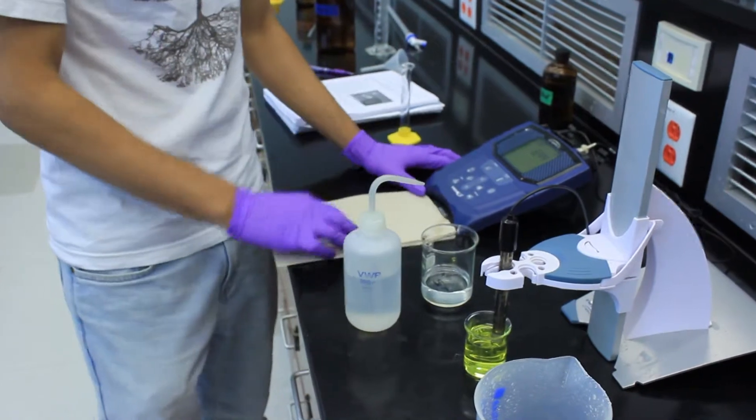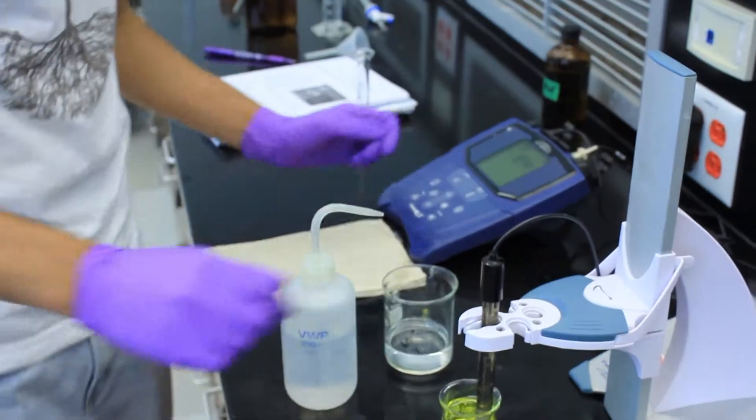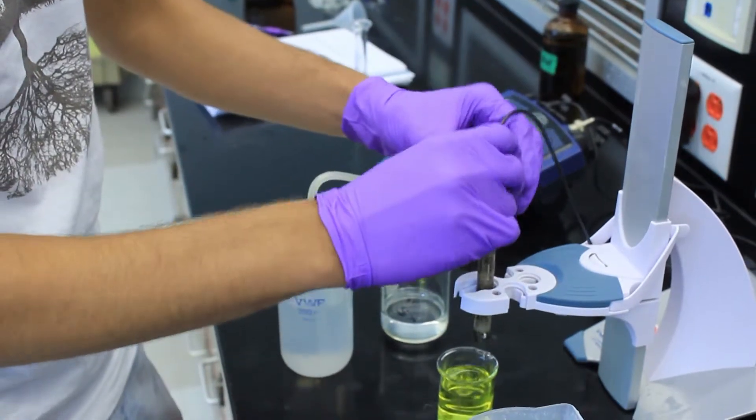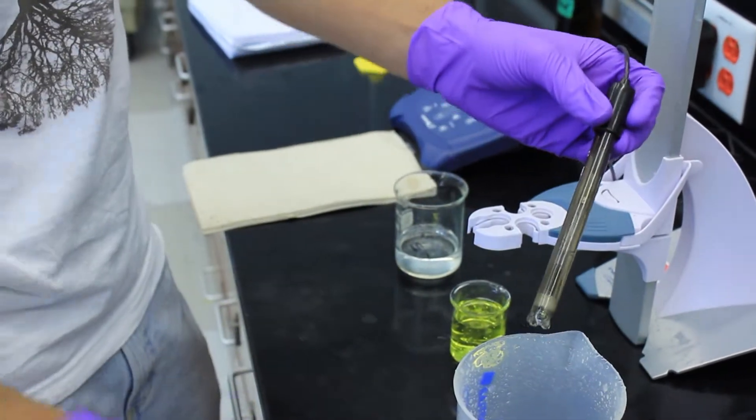There are two types of pH meters, the Symphony and the Denver. This is the Symphony. To measure with this pH meter, make sure the glass electrode is properly rinsed and dried. Be very careful because it can break really easily.